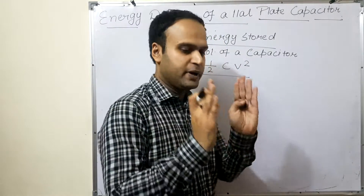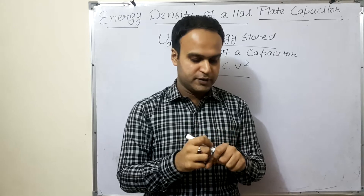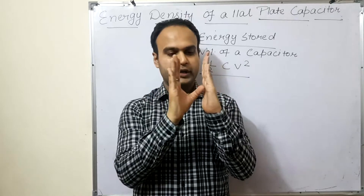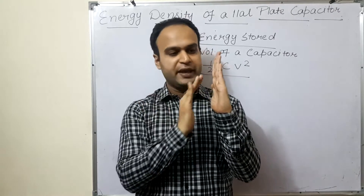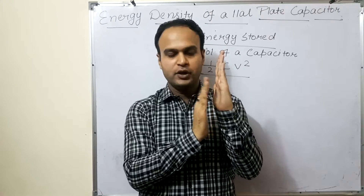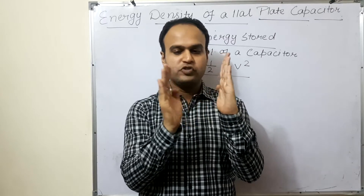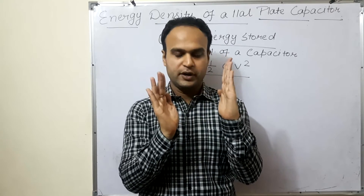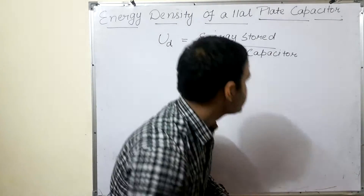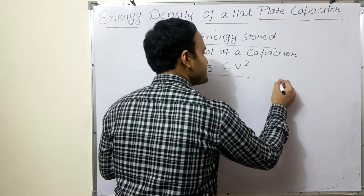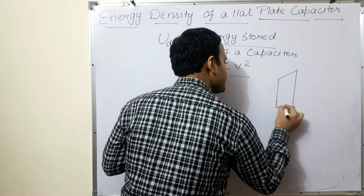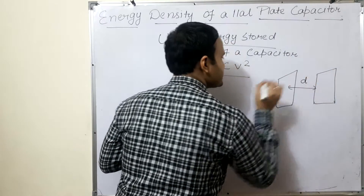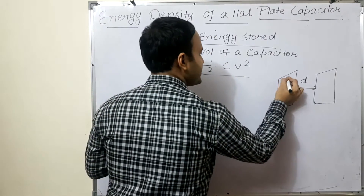Just suppose this is a parallel plate capacitor. D is the distance between the two plates, and A is the area of the plate. So the volume of this capacitor is area A multiplied by the distance D between the plates.